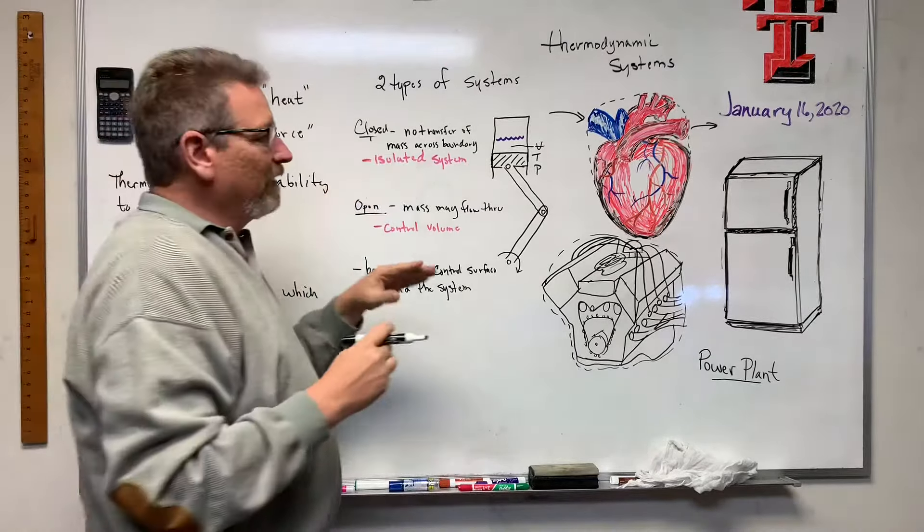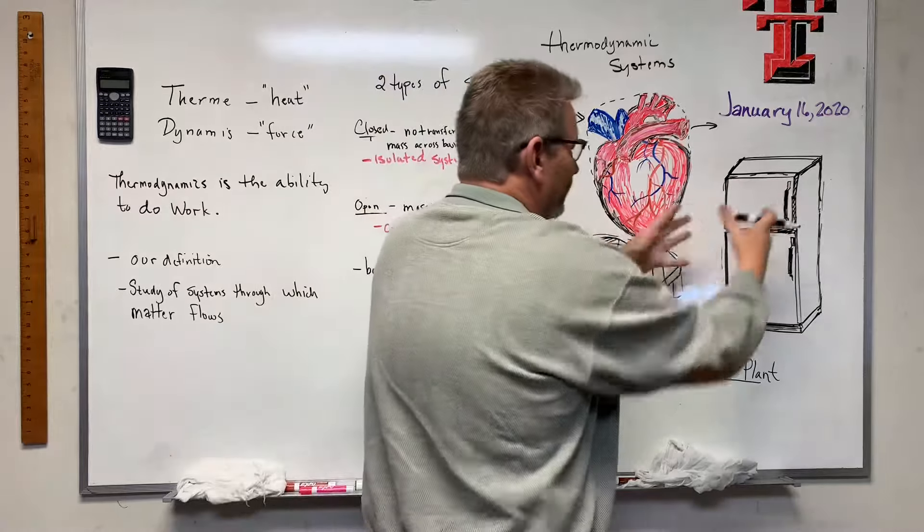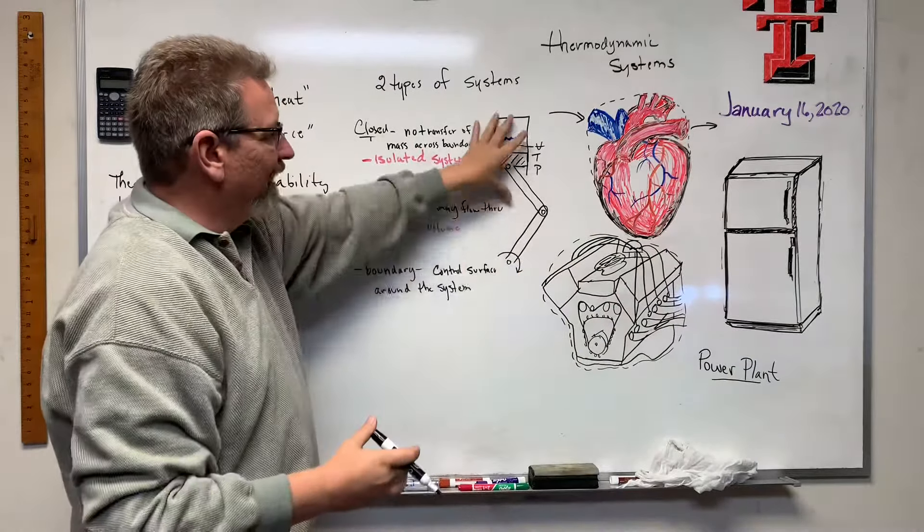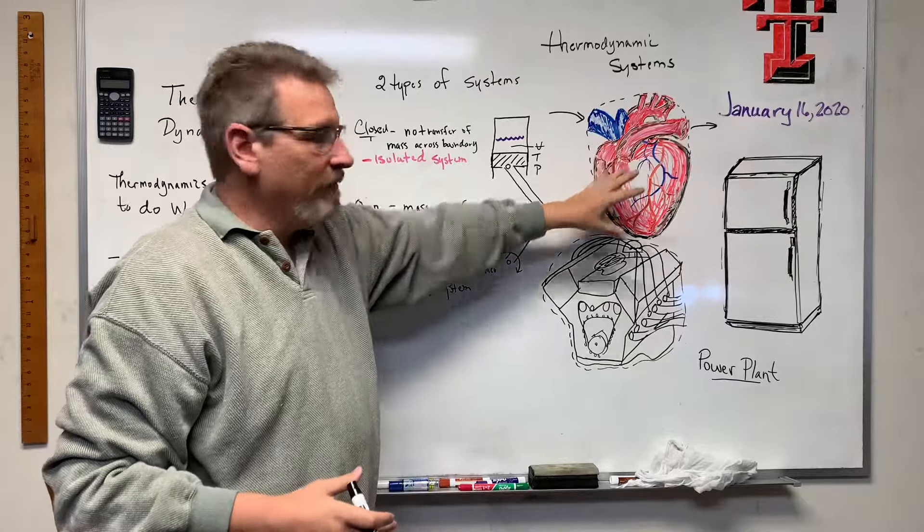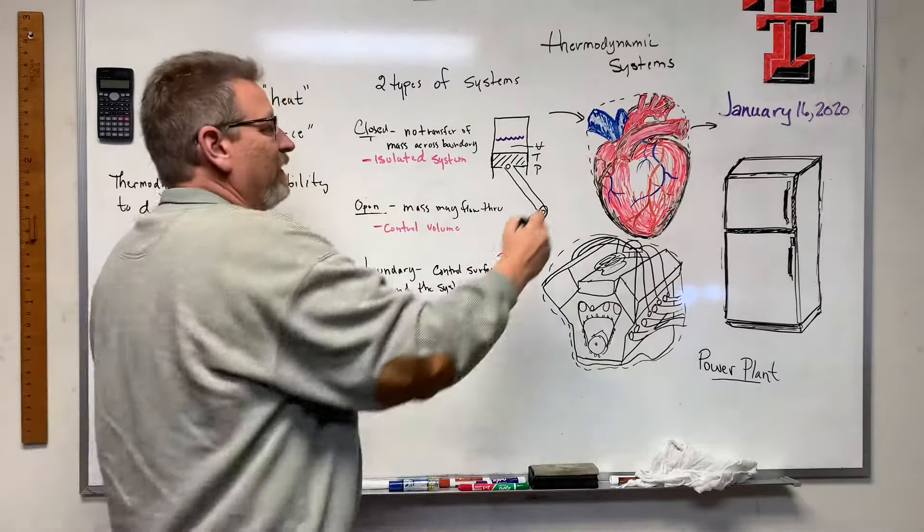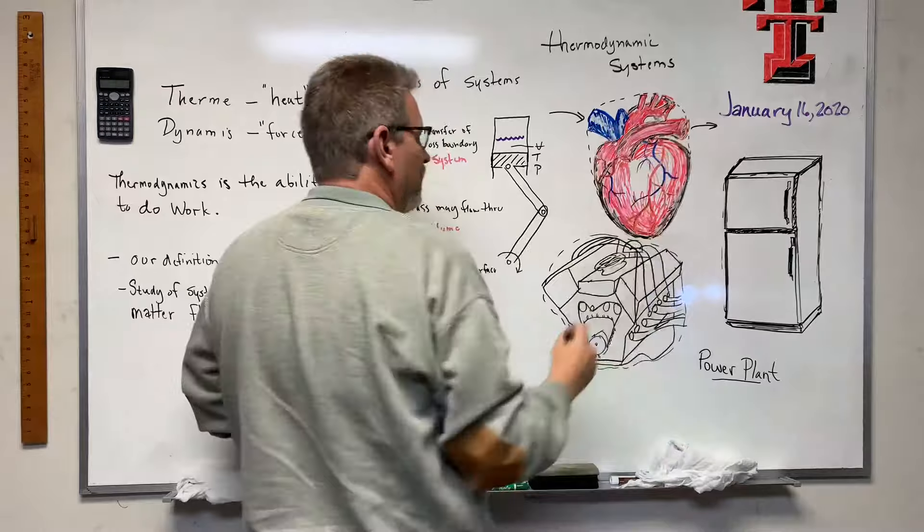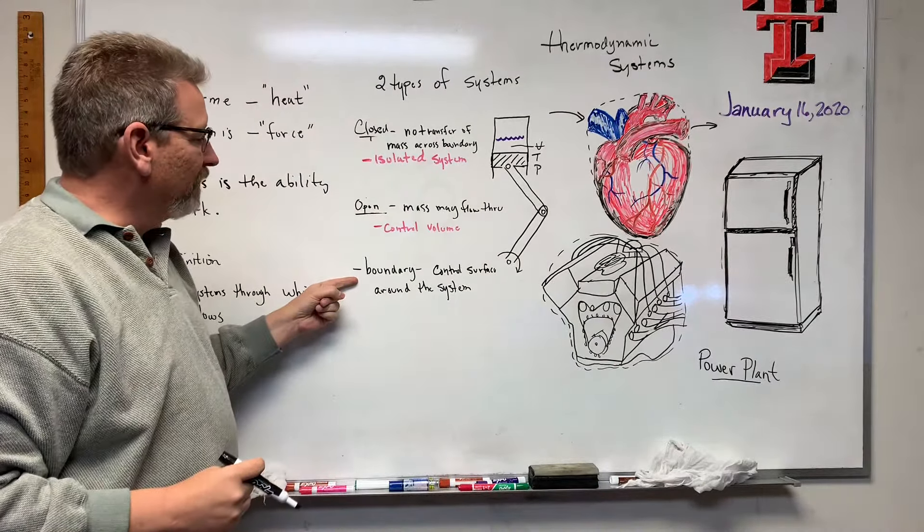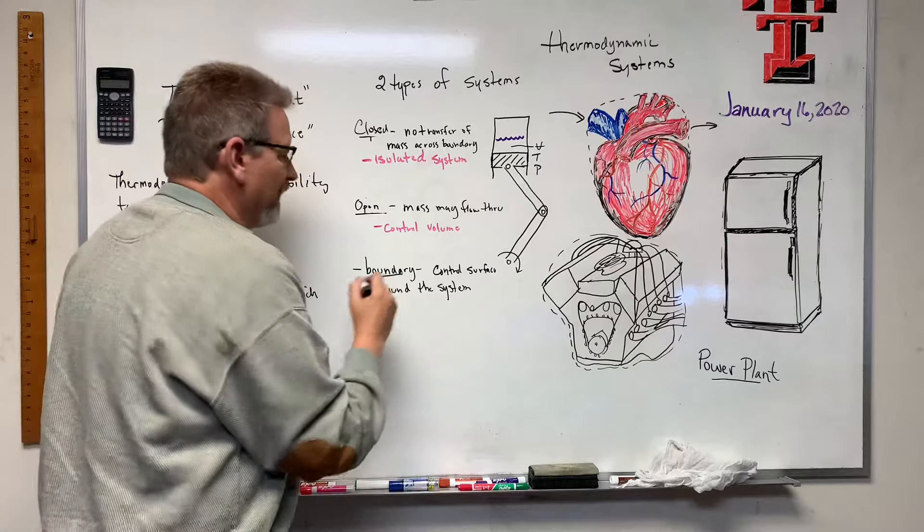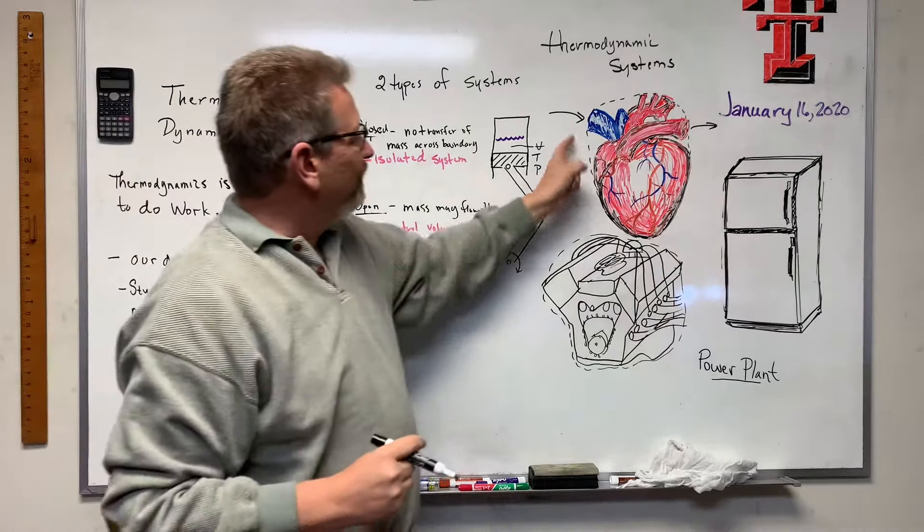A closed system we call an isolated system. That's an isolated system. These - we have something called a control volume, and the control volume is nothing more than the area inside of that boundary. What's happening there.